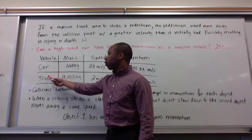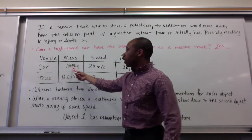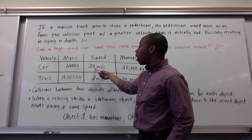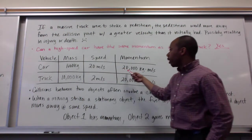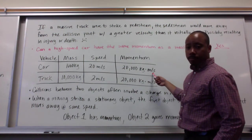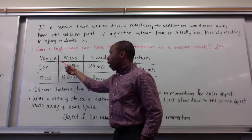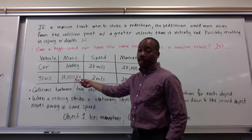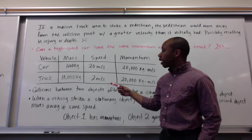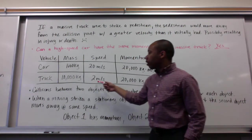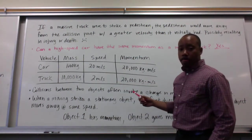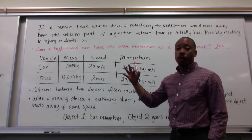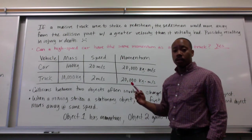Here's an example with a car and a truck. If a car has a mass of 1,000 kilograms and moves at a speed of 20 meters per second, mass times velocity gives momentum of 20,000 kilogram·meters per second. If a truck has a mass of 10,000 kilograms and moves at a speed of 2 meters per second, mass times velocity also equals 20,000 kilogram·meters per second. These two have the same momentum.